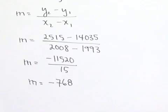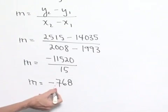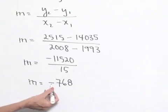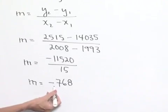Our m value is negative 768. This indicates that, on average, we have a decrease in the number of escapees of 768 per year.